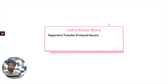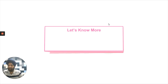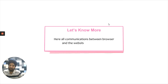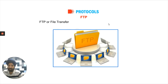HTTPS, or Hypertext Transfer Protocol Secure, where S stands for Secure, is the secure version of HTTP. It is the protocol over which data is sent between your browser and the website that you are connected to. All communications between the browser and the website are encrypted — that is what S, Secure, stands for.